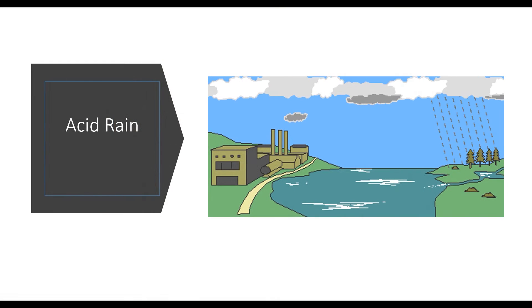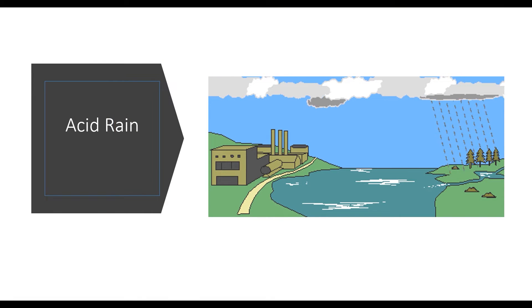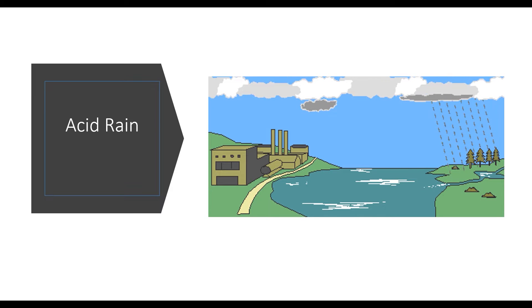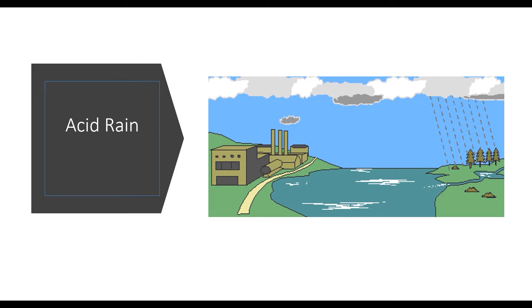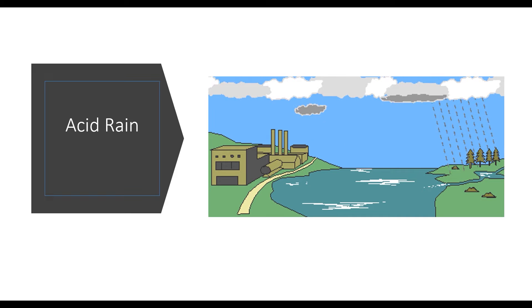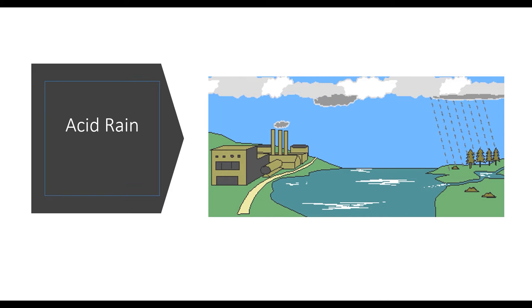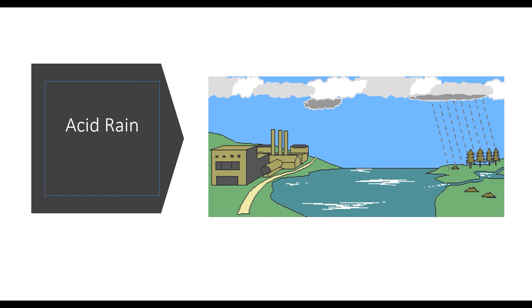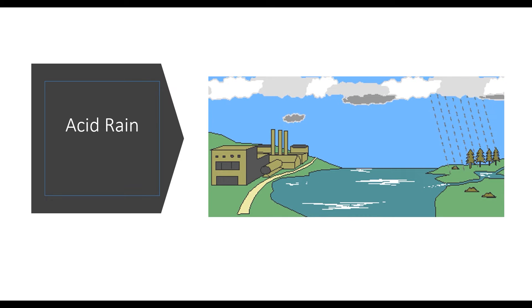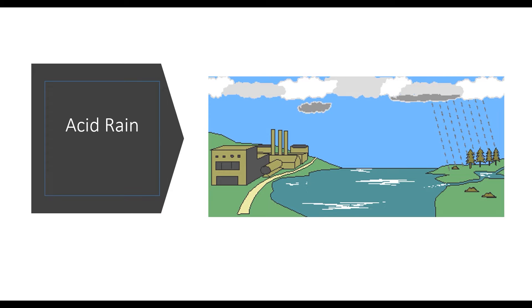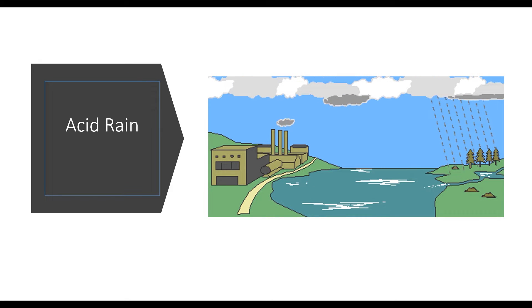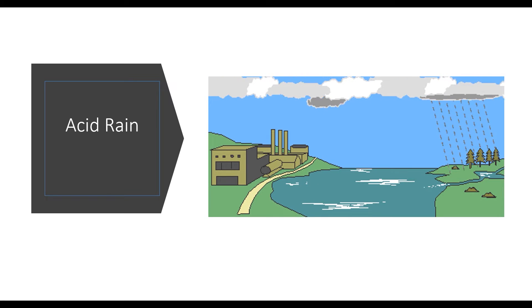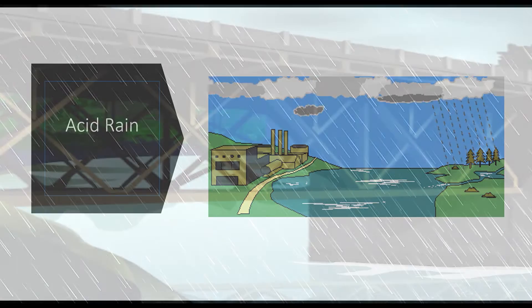Acid rain is rainwater that is mixed with various air pollutants such as sulfur dioxide and oxides of nitrogen. Sulfur dioxide and oxides of nitrogen released from industrial areas and vehicles react with water vapor in the air to form acids, namely sulfuric acid and nitric acid. These acids are soluble in rainwater and fall to the earth in the form of acid rain.